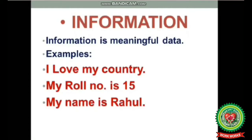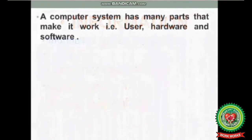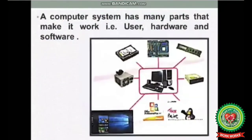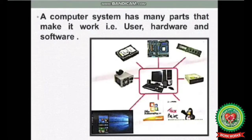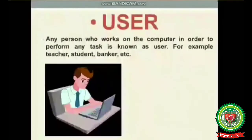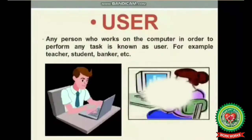So in this way, data are simply figures or raw facts, and information is meaningful data. A computer system has many parts that make it work — that is, user, hardware, and software. Now we will discuss these terms one by one. The first one is user.